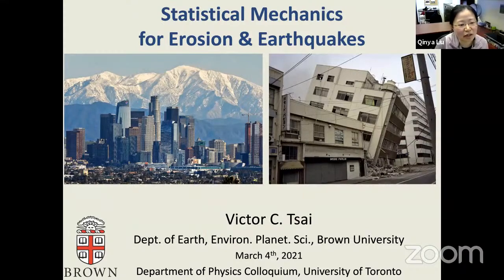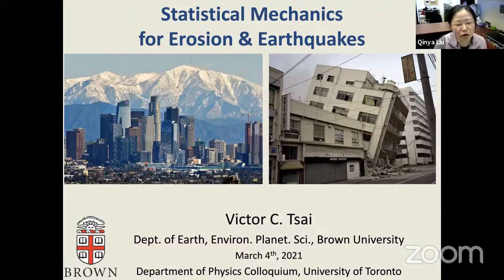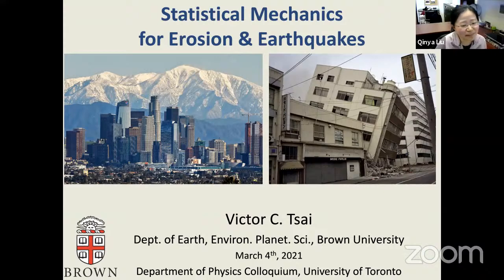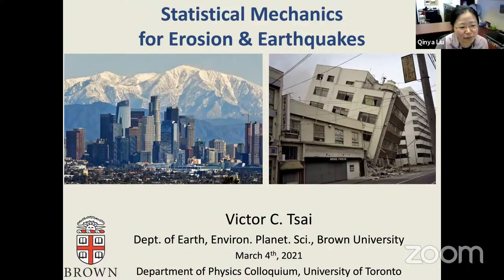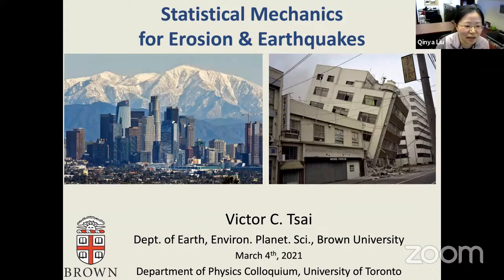Victor became a full professor in 2017, then moved to Brown University in 2019. He has worked on various subjects in geophysics, from modeling frictions on faults to glacier subglacial hydrology, tsunamis, and debris flows. A continuous theme in Victor's work is applying physics modeling to geophysical problems. He also received the 2012 Archie Young Science Award, one of the most prestigious AGU — the American Geophysical Union — awards for outstanding young scientists.